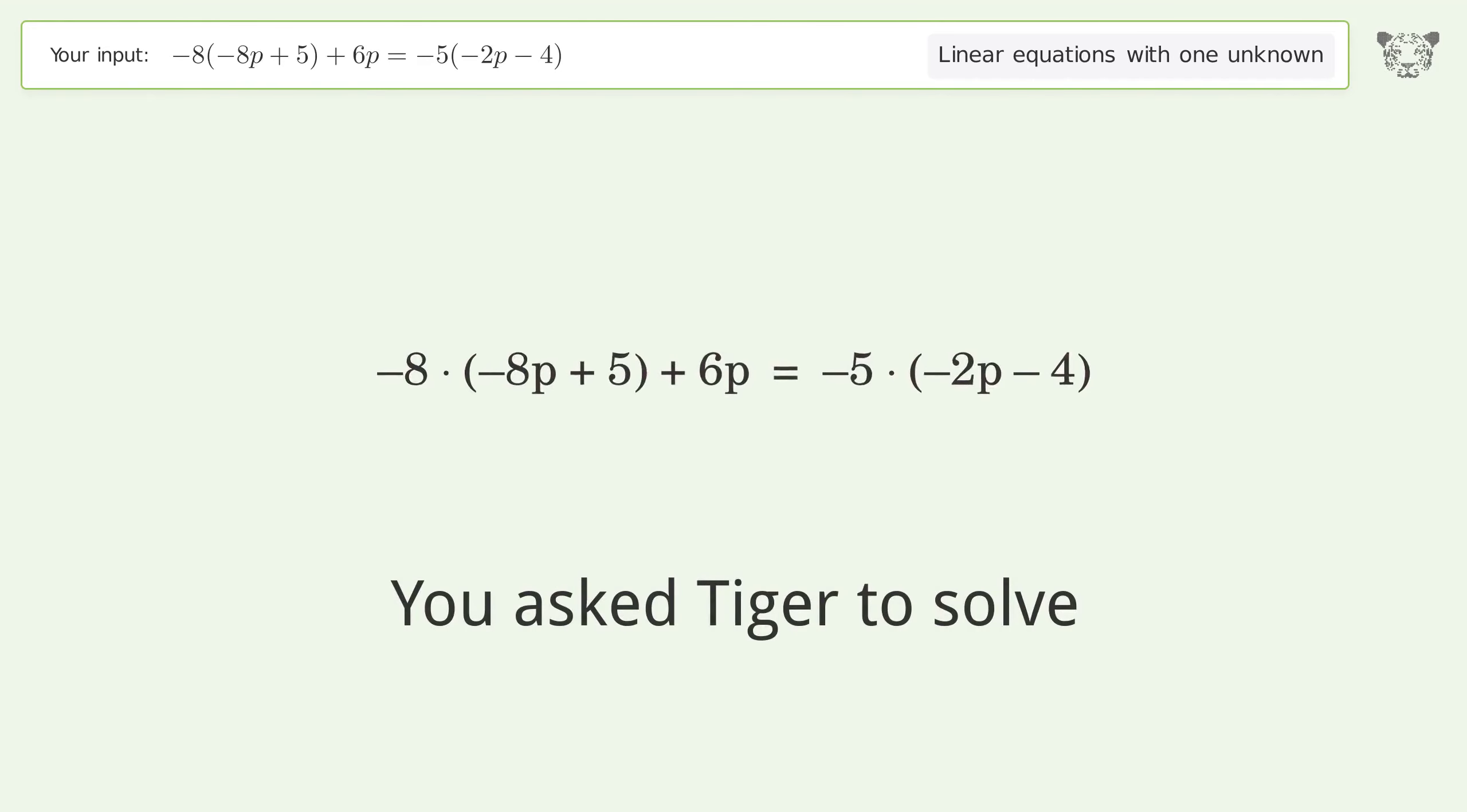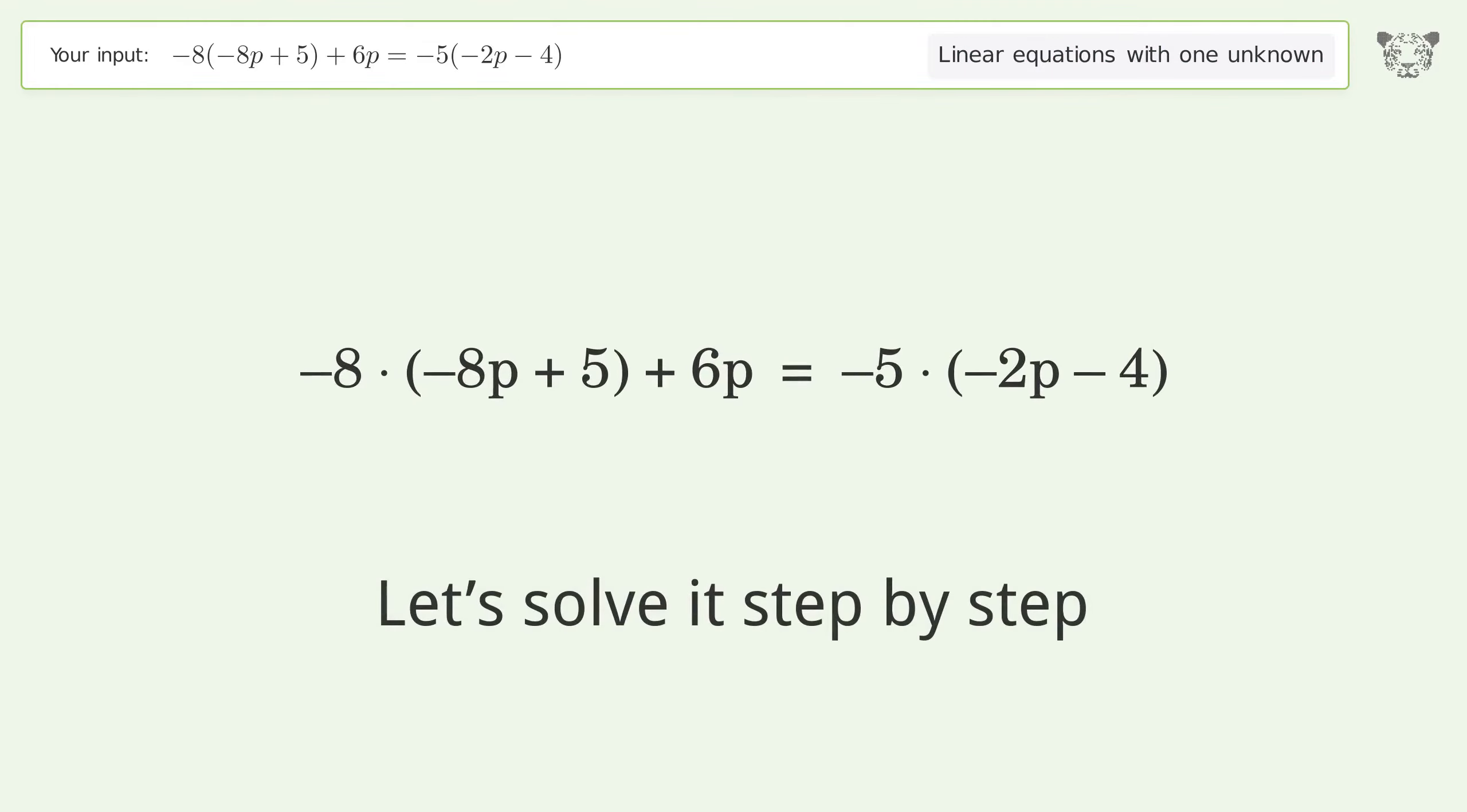You asked Tiger to solve this. It deals with linear equations with one unknown. The final result is p equals one. Let's solve it step by step.